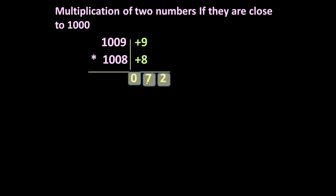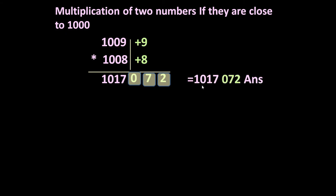So the last three digits will be 072. To get the first few digits, let us do the cross multiplication: either 1009 plus 8 or 1008 plus 9 — in both ways we get 1017. So the answer is 1017 072. This is the multiplication of these two numbers.